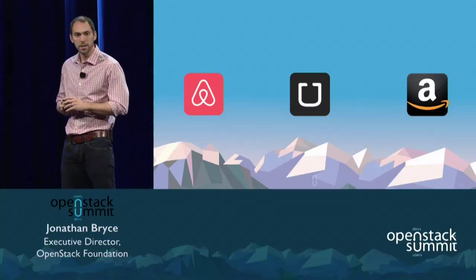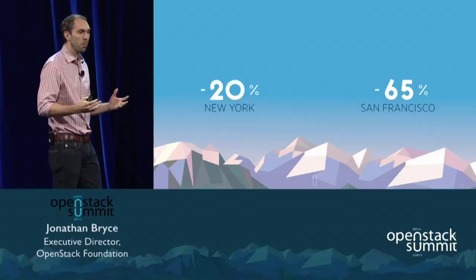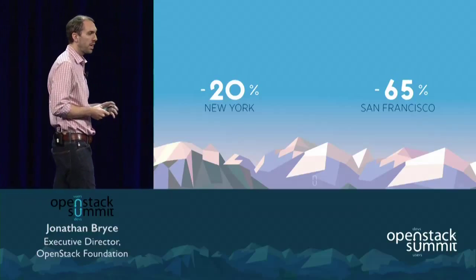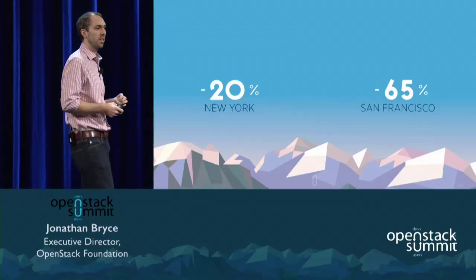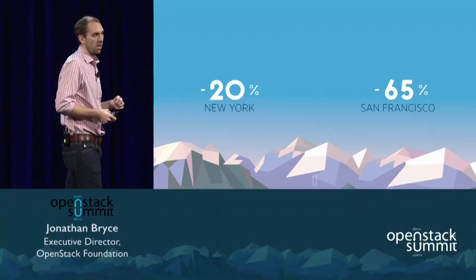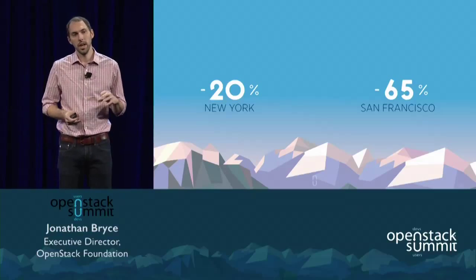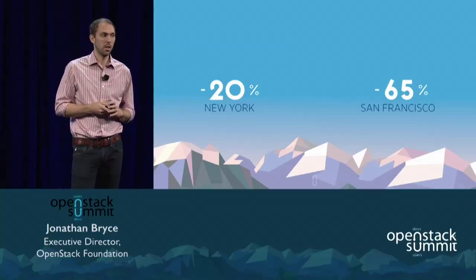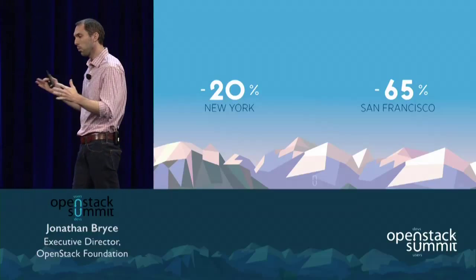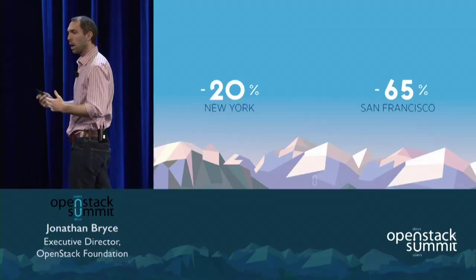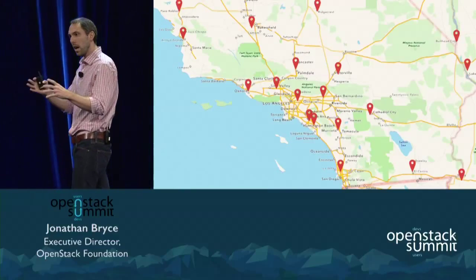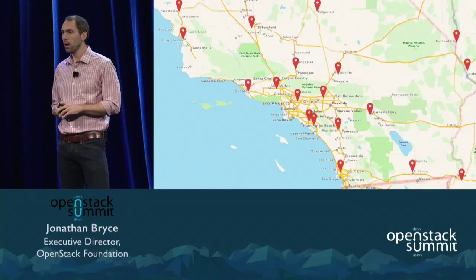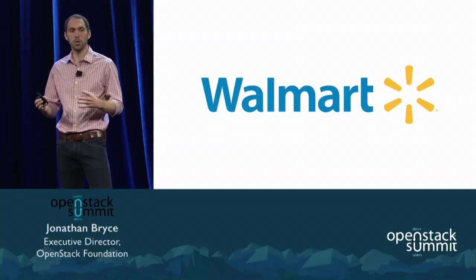If we just look at the taxi industry — ride-sharing services like Lyft and Uber have had a dramatic impact. The price of a taxi medallion in New York City has dropped 20% since Uber was introduced. In San Francisco, the number of taxi rides has dropped 65% since Uber started service there. That is true disruption of an industry. There's not a real walled garden anymore that isn't available to this. Later this morning we're going to be hearing from the largest company in the world, Walmart, about how they're approaching this.